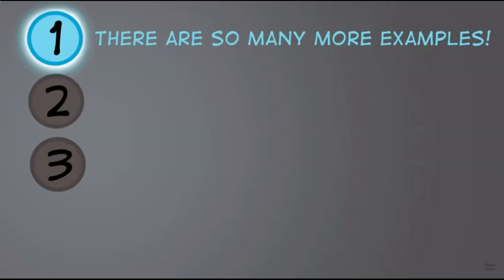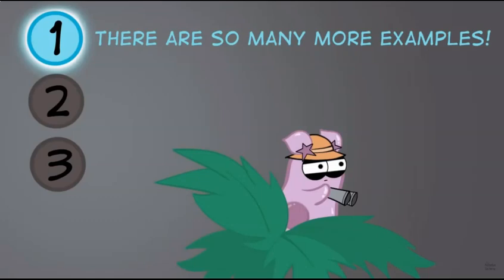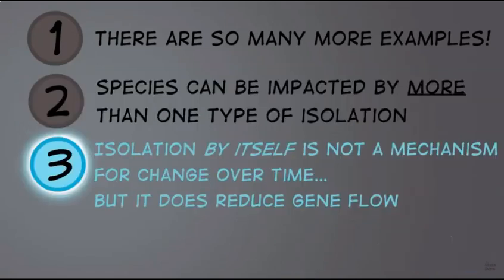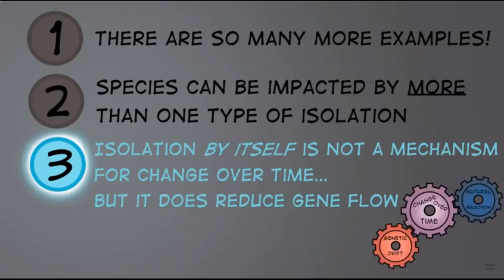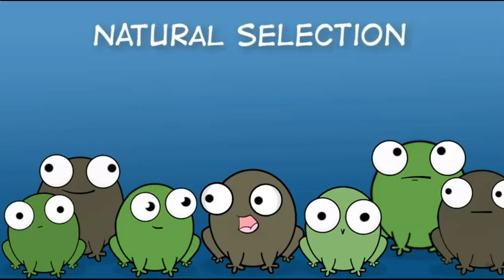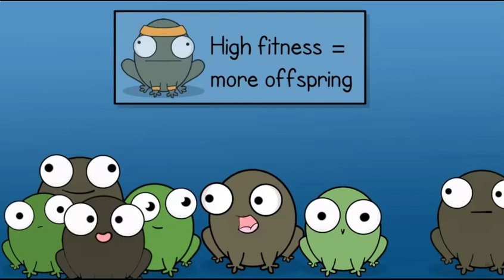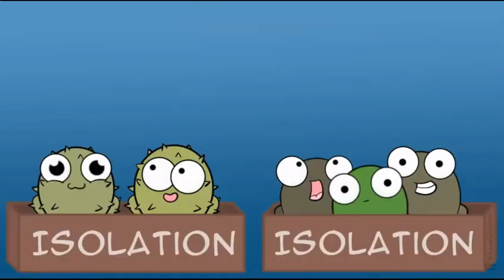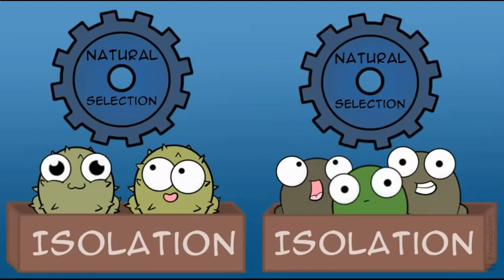To summarize three important points: first, these are just a few examples of isolations that can lead to speciation — there is a huge list of other isolation types to explore. Second, species can be impacted by more than one type of isolation. Third, isolation itself is not the mechanism for the actual change over time. Change over time in gene pools of populations can be due to mechanisms like genetic drift or natural selection. Isolation is what separates the gene pools of species, so the mechanisms act on the populations separately.